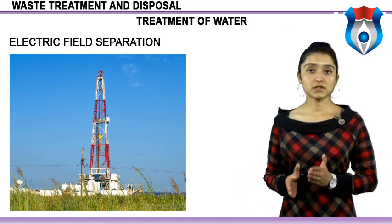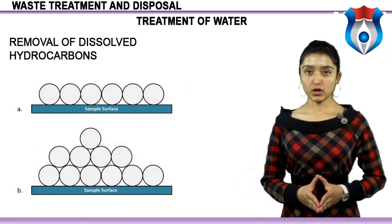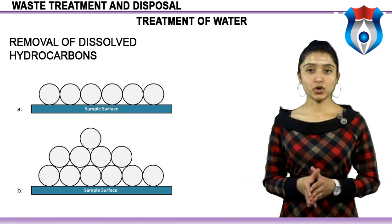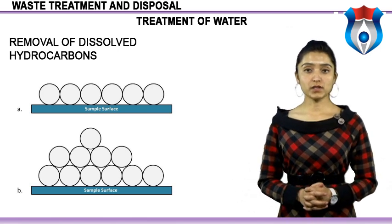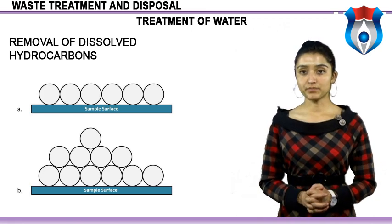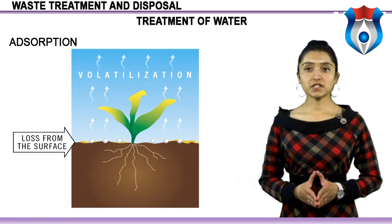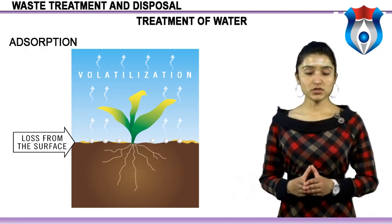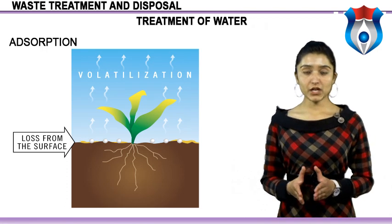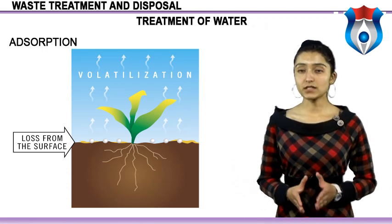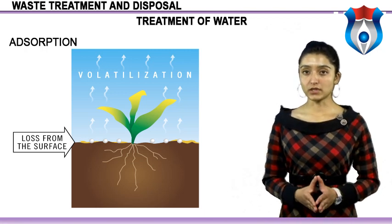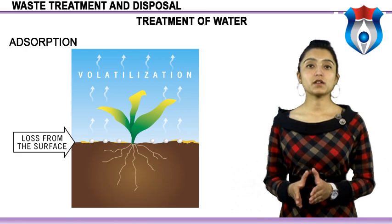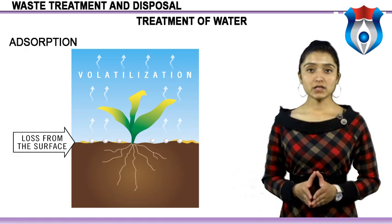Removal of dissolved hydrocarbons: in addition to suspended hydrocarbons, most produced water also contains varying amounts of dissolved hydrocarbons. A variety of methods are available to remove these. Absorption: an effective way to remove low levels of dissolved hydrocarbons is to absorb them onto a solid medium. The most widely used medium is activated carbon. The pH and temperature of the system impact the effectiveness of activated carbon. All free oil must be removed prior to use of activated carbon to prevent clogging. Some coal may also be used as an absorption medium.